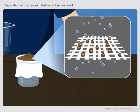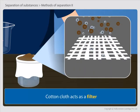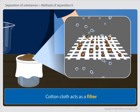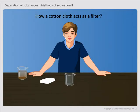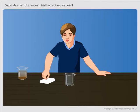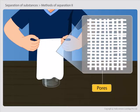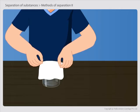What do you observe? You will observe that soil particles remained in the cloth while the water passes through the cloth and gets collected in the second beaker. Do you know why? This is because cotton cloth acts as a filter.